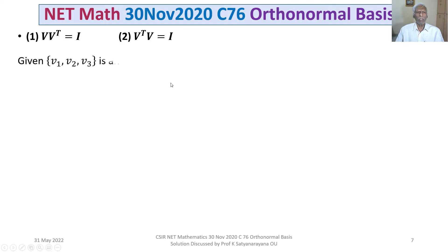We are given the set consisting of V₁, V₂, V₃ is an orthonormal basis of the Euclidean space R³, meaning that the inner product of Vᵢ, Vⱼ is 0 when i ≠ j and is equal to 1 when i equals j.